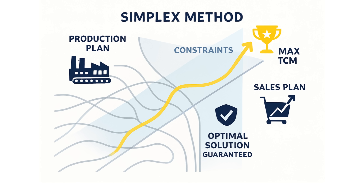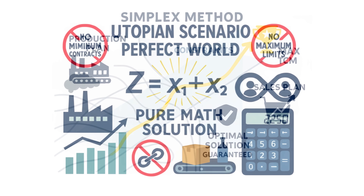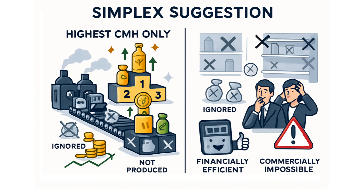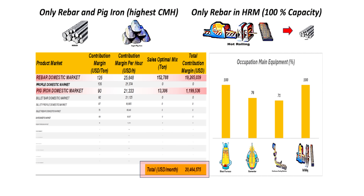Let's run this GPS for DemoSteel. First, let's imagine a perfect world — the utopian scenario. What if there were no commercial constraints? No minimum contracts, no maximum market demand limits. If they could just make and sell whatever the math said was best, it would suggest running the machines making only the products with the very highest CMH — so mostly rebar domestic and also pig iron ingots. The hot rolling mill would be booked solid at 100% capacity just making rebar.